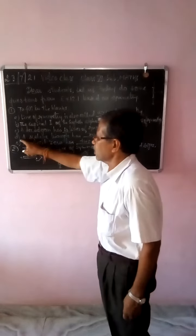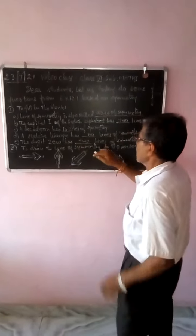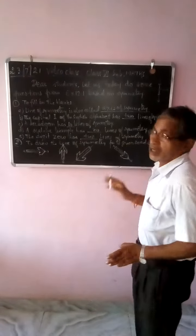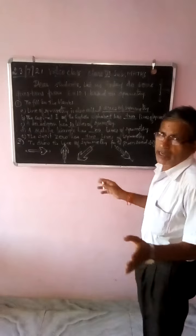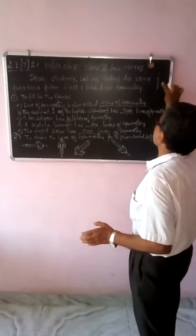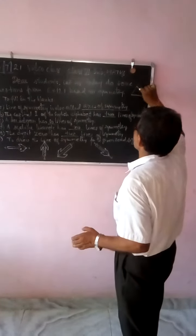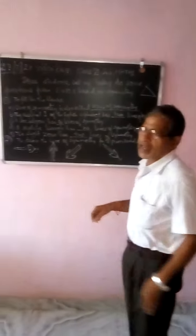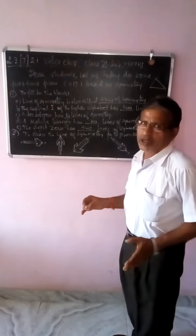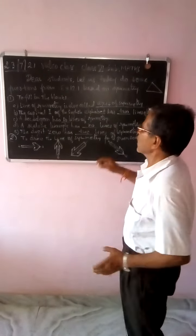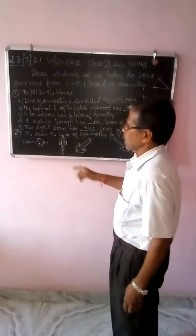Then number D: a scalene triangle has how many lines of symmetry? We should know that a scalene triangle has no lines of symmetry. A scalene triangle is like this — if none of the sides are equal, no line of symmetry can be found in such a triangle. So a scalene triangle has no line of symmetry.